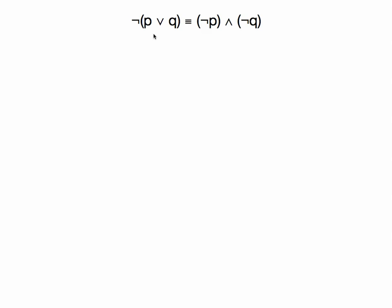Let's start by looking at this example where we're going to show that not (P or Q) is logically equivalent — that's what that symbol means — to not P and not Q. This is the second part of what's known as DeMorgan's Laws, one of many laws of logical equivalence. DeMorgan's Law, part two.